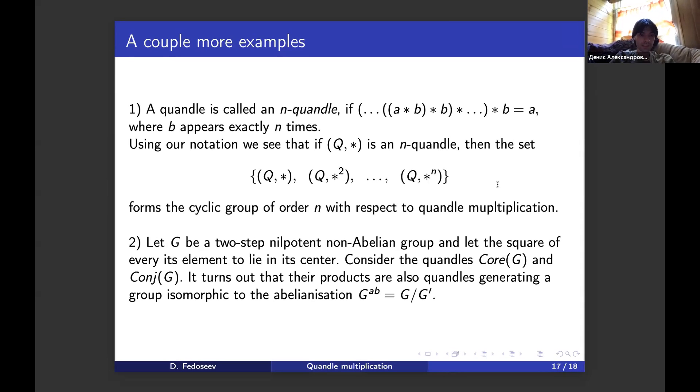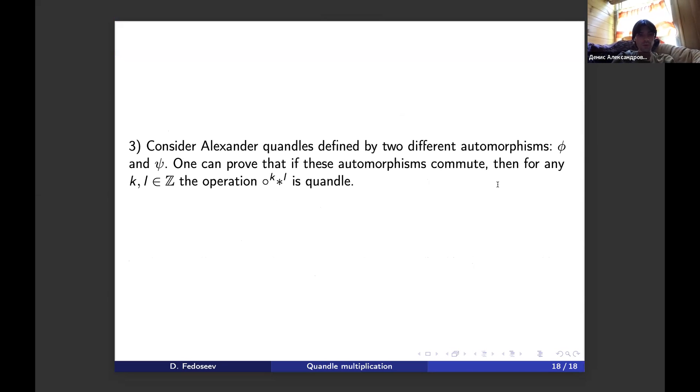The second example: let G be a two-step nilpotent non-abelian group and let the square of every element lie in its center. Such groups are well known and exist. Consider the core quandel on this group G and conjugation quandel on the same group G. It turns out that their products are also quandels and they generate a group isomorphic to the abelianization of the group G.